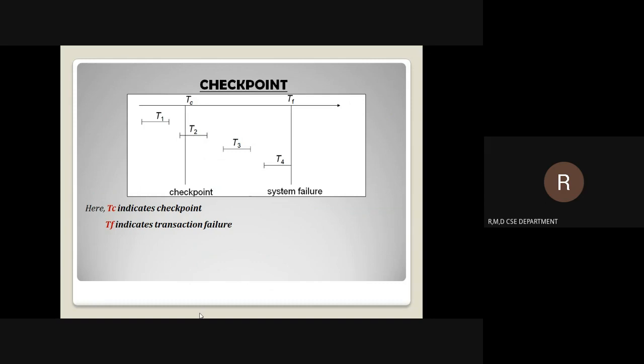Here in this diagram, there are two points mentioned: TC and TF. TC indicates a checkpoint and TF indicates a point of transaction failure. T1 is already completed before the checkpoint.